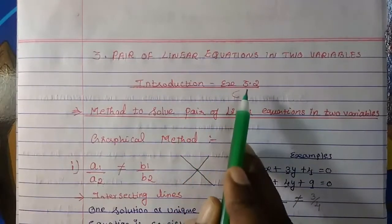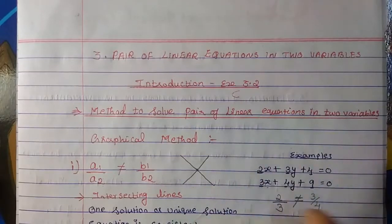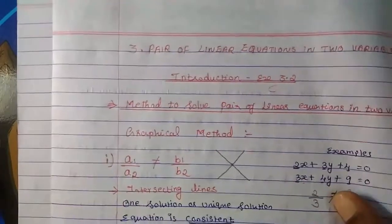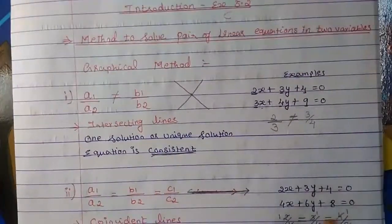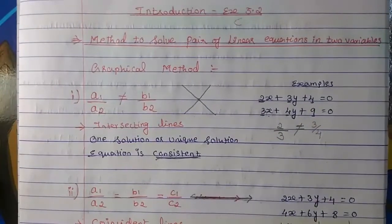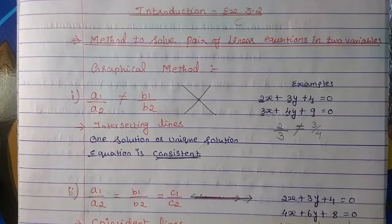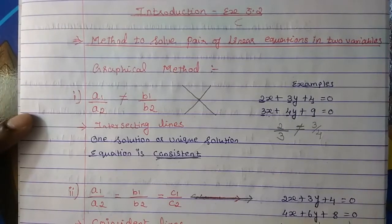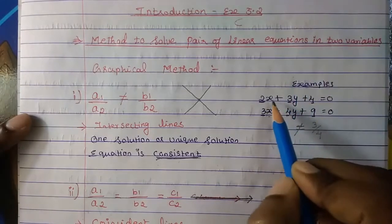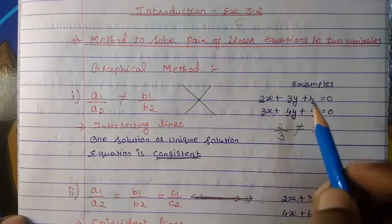In the introduction for exercise 3.2, I explained that without plotting the graph, only looking at the equation, how we can find out whether our graph is going to be intersecting, or parallel, or coincident. When the equations are given, all you have to do is compare the coefficients.